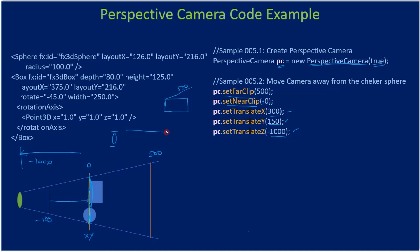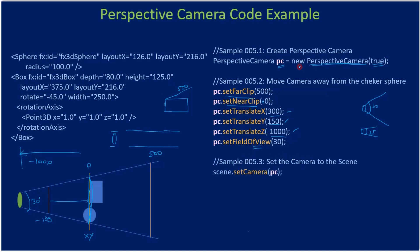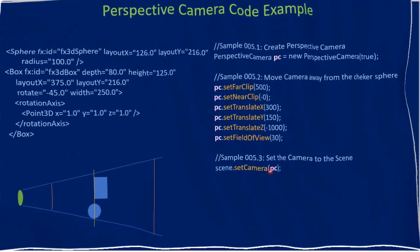A perspective camera uses cone projection, unlike parallel projection where the camera projects in parallel. The perspective camera is more like our eyes — it uses perspective projection. The field of view is set to 30 degrees; you can use different values like 60 degrees or 25 degrees. How much of the view is covered is decided by the field of view. As usual, once the camera is prepared we set it to the scene, and we'll see how it views our textured sphere and box. Now let's go to the demo.